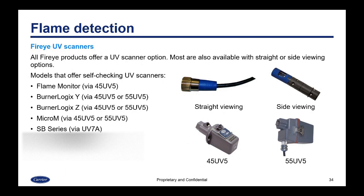All FireEye products offer a UV scanner option. Most are also available with a straight or side viewing option. Models that offer self-checking UV scanners are our Flame Monitor, BurnerLogix Y, Z, MicroM, and SB series.